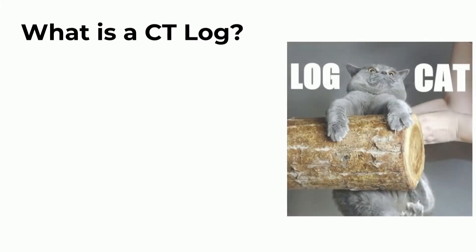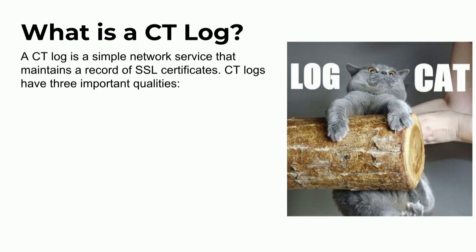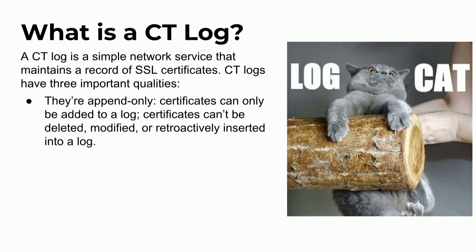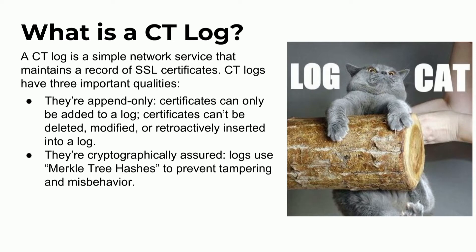A CT log is the key component of making certificate transparency work. It's basically a simple RESTy network service with an RFC and about a dozen endpoints. All it does is log certificates. But it has some really important qualities: they're append-only, with crypto built in so APIs only allow adding new certificates — you can't retroactively remove, modify, or delete entries. Whenever a new entry is added, you take a hash of the previous entry along with the new one and sign that hash. If anything is modified back in the log, this chain of hashes wouldn't match up, and everyone watching the logs would realize it's no longer trustworthy.